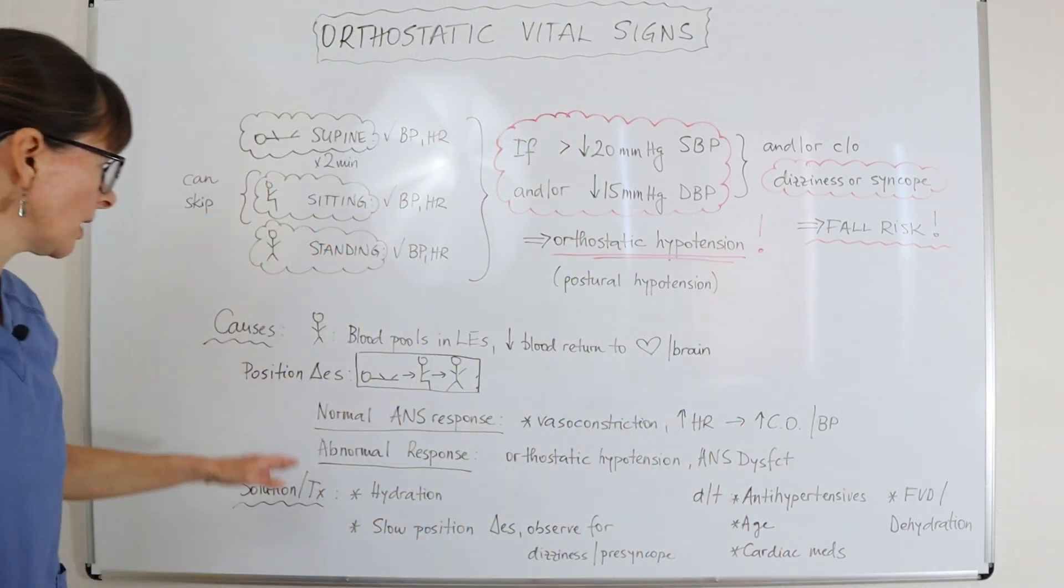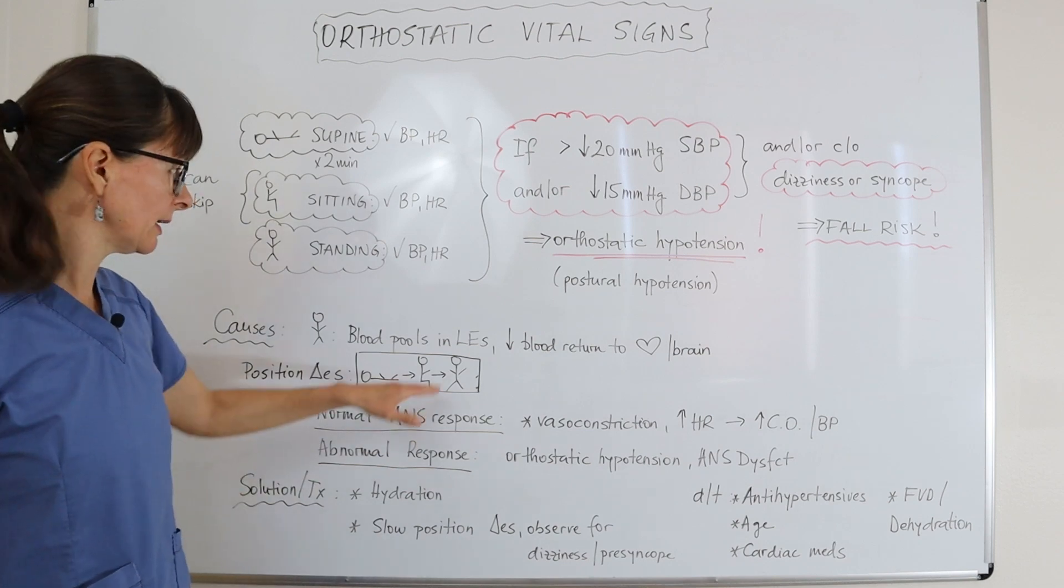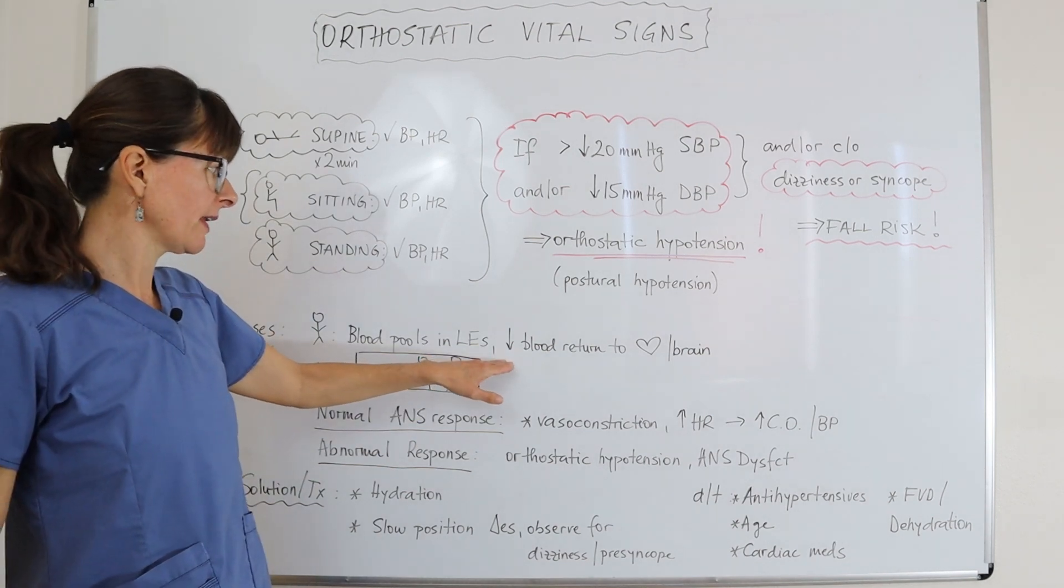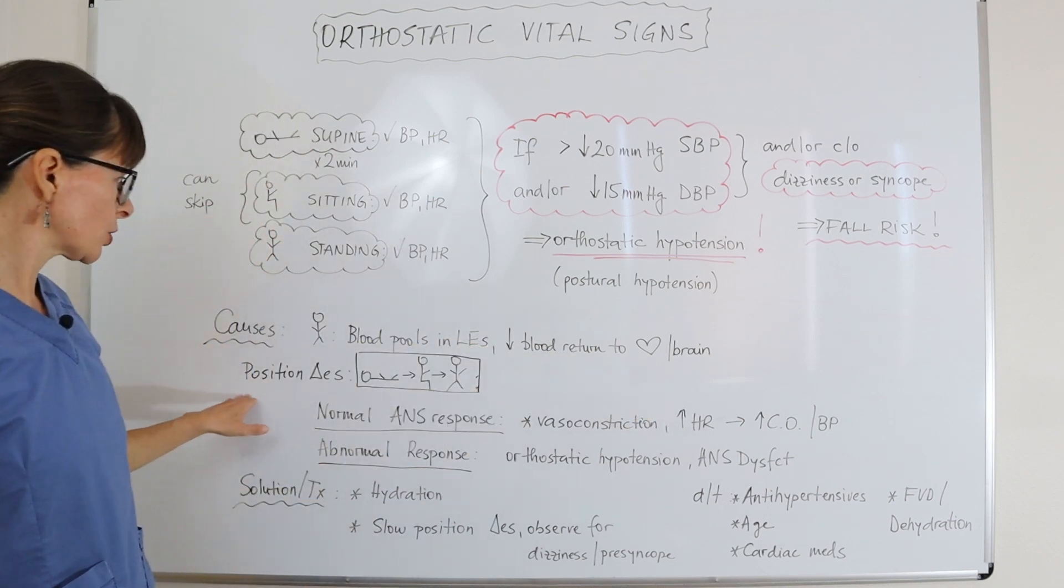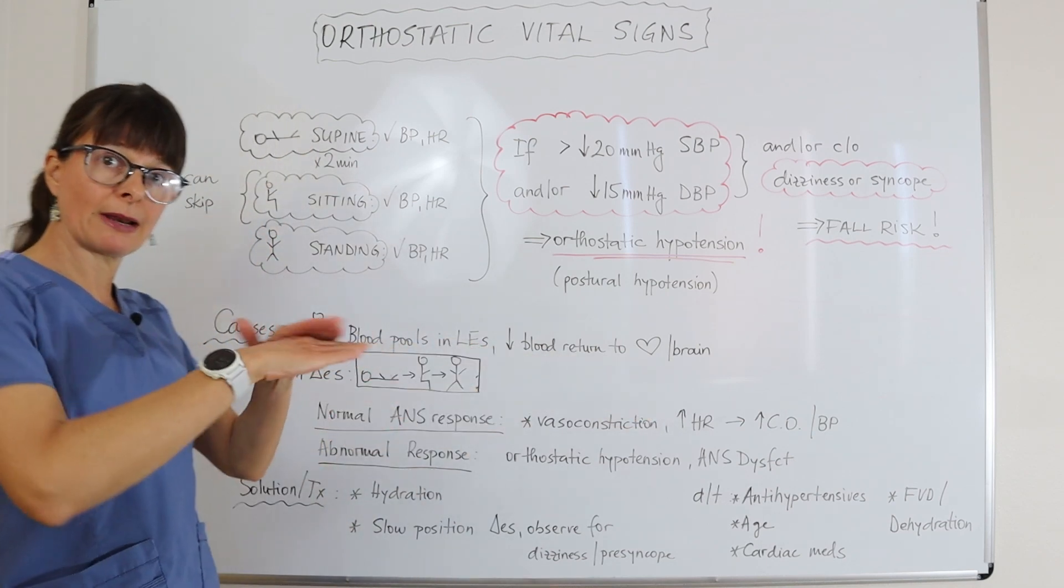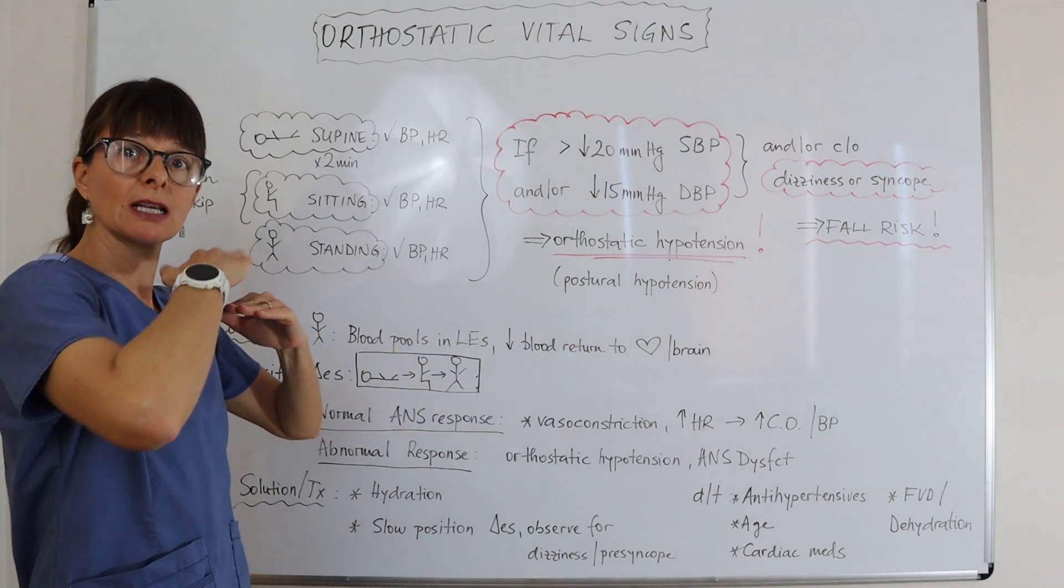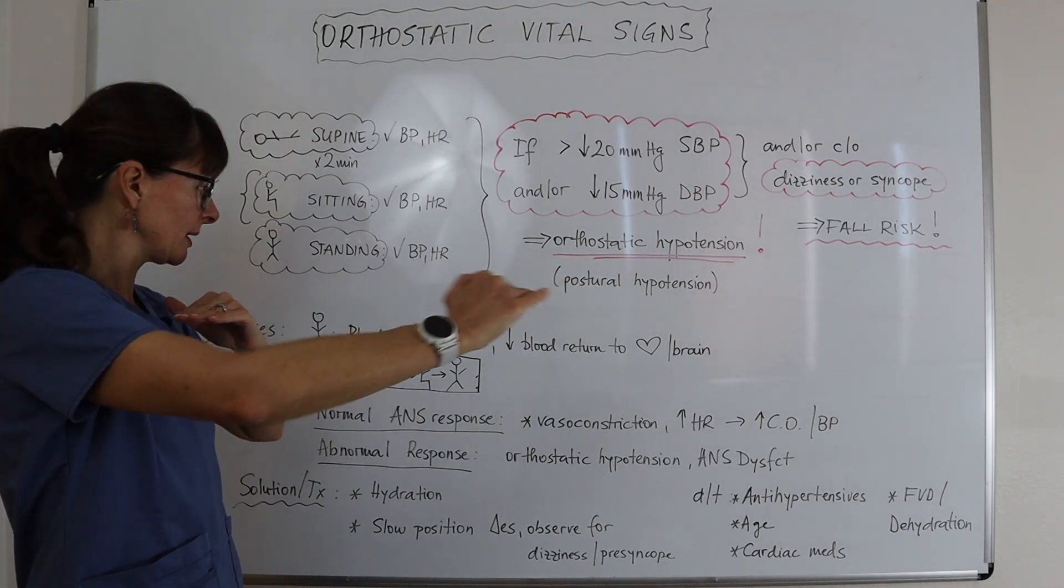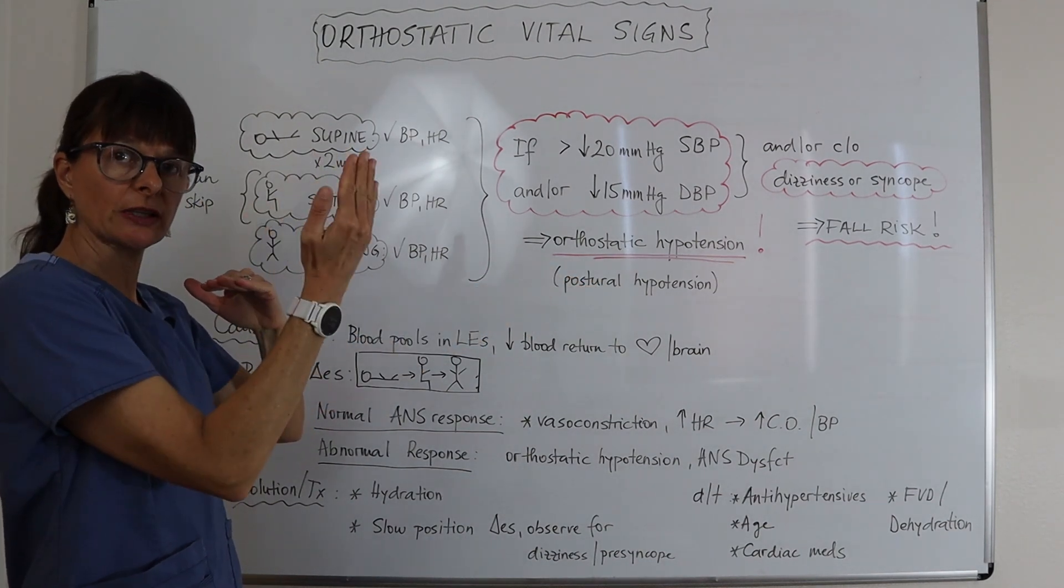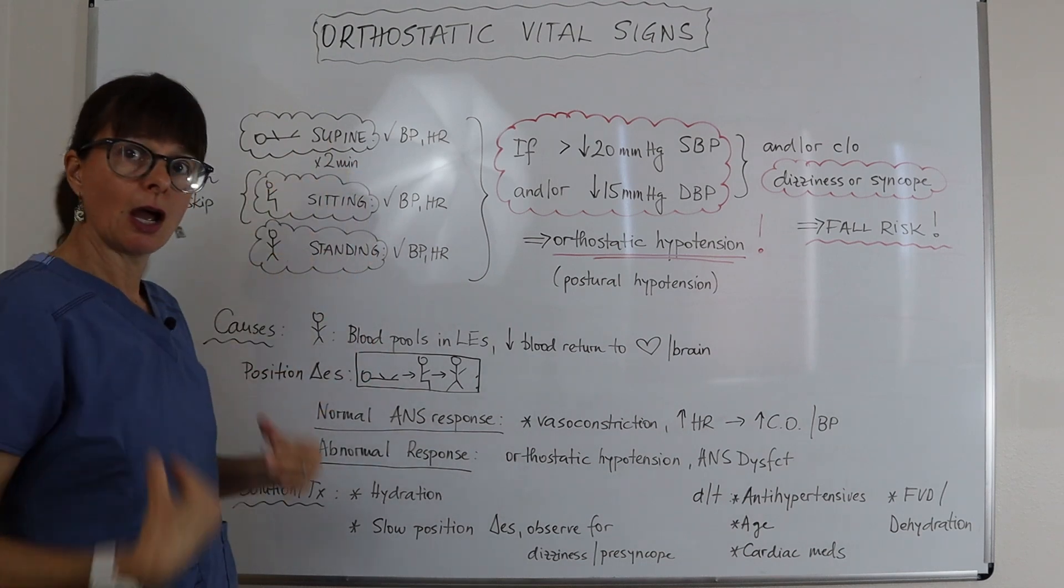Typically when we are upright, our blood pools with gravity in the lower extremities, and therefore we have less blood return to the brain and the heart. When we change positions from laying down flat, all that blood pools with gravity basically evenly throughout our bodies. Then when we change, there are different requirements because now gravity has a different effect on our blood volume.